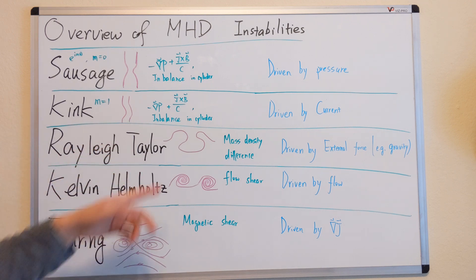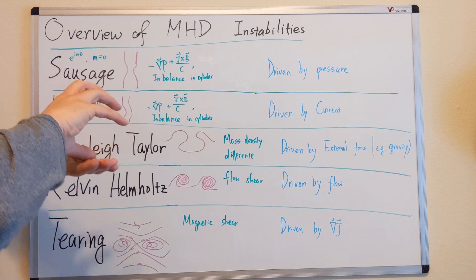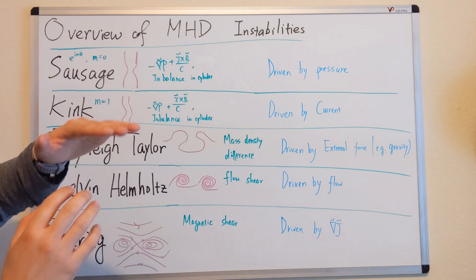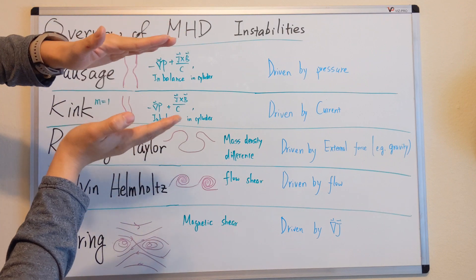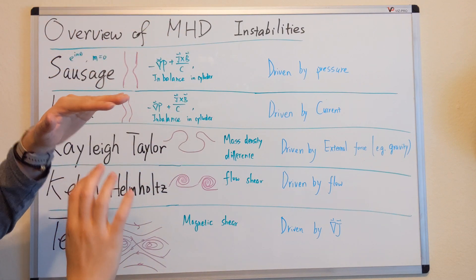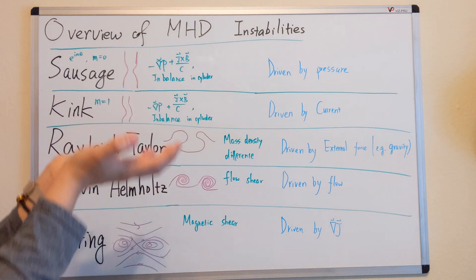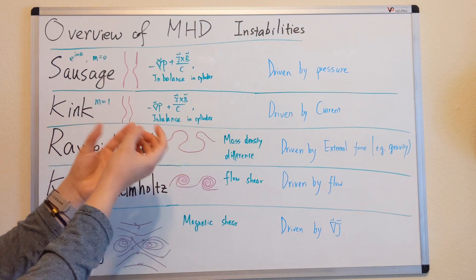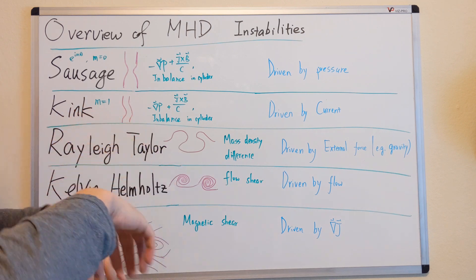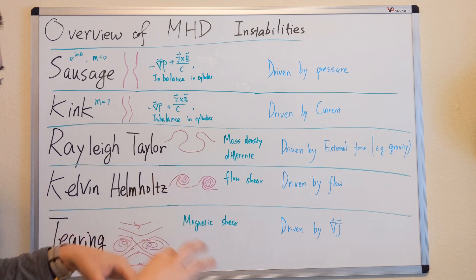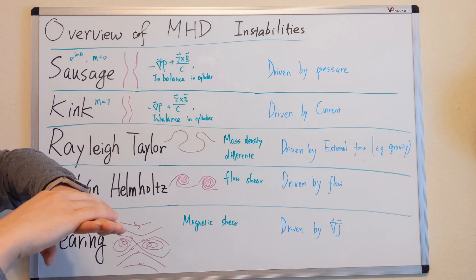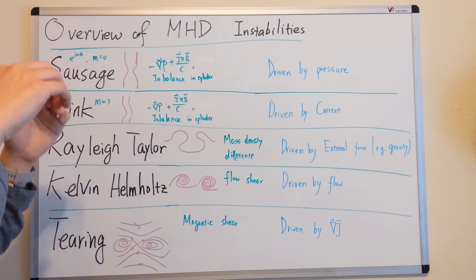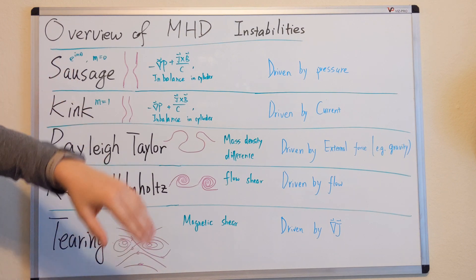The Rayleigh-Taylor instability is basically like a layer where the upper layer is a denser material and the lower is a lighter material. Sometimes it's like the upper is plasma and the lower is a magnetic field — the magnetic field is supporting the plasma. If you have a perturbation, it will dip in and become unstable. You can imagine oil at the bottom and water at the top: if you give a perturbation, the water will go down and the oil will go up.